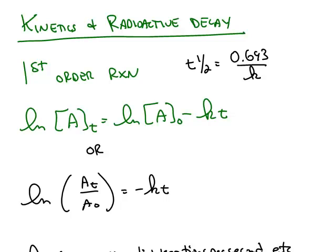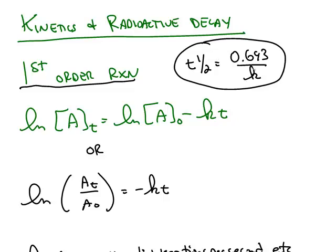Next we are going to talk about the kinetics of radioactive decay. It turns out that radioactive decay follows first order kinetics. So we have some equations like this one for the half-life related to the rate constant k. We have the integrated rate law form which I have rewritten below it in a slightly different form.